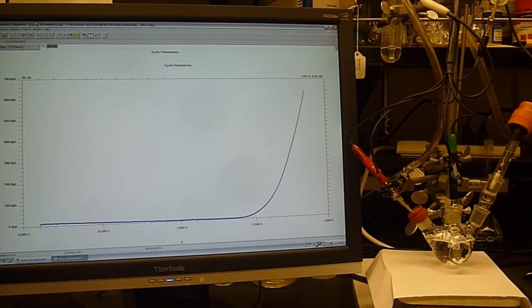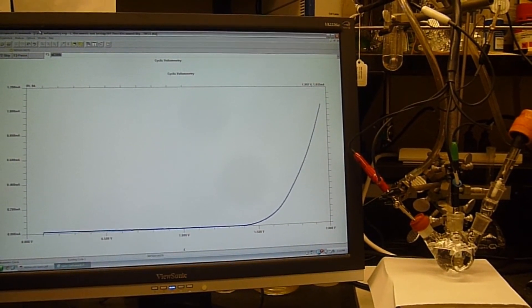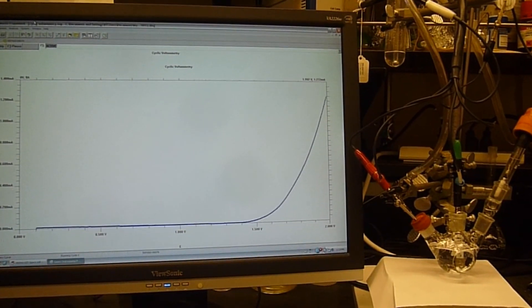Here we're measuring a dark cyclic voltammogram of our tungsten oxide film, and what you're seeing is an increase in anodic current related to the oxidation of water.